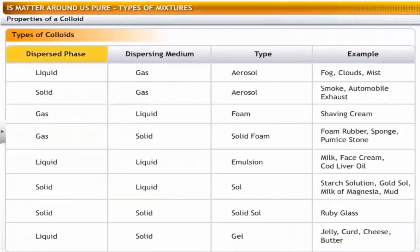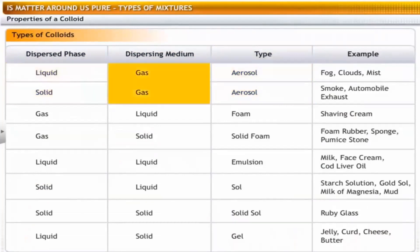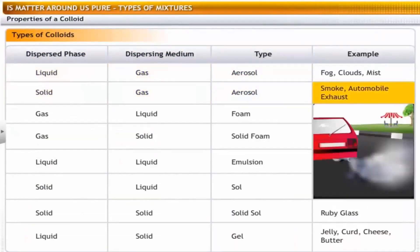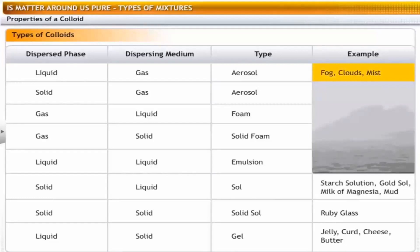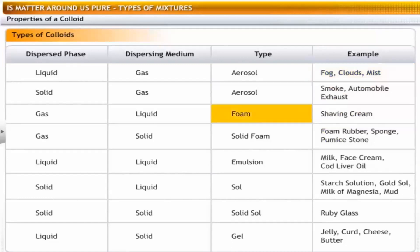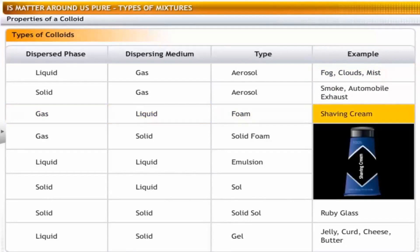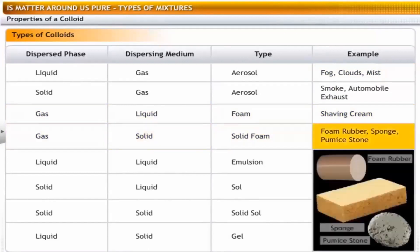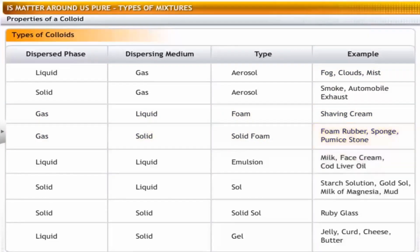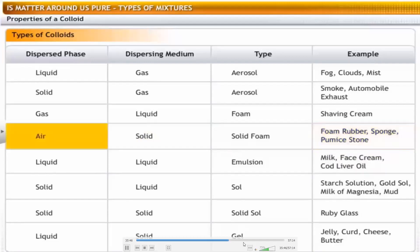An aerosol is a colloid in which the dispersed phase is a solid or liquid and the dispersing medium is a gas. Smoke and automobile exhausts are aerosols in which solid carbon particles are dispersed in air. Fog, clouds and mist are aerosols in which water is dispersed in air. Foam is a colloid in which a gas is the dispersed phase and a liquid is the dispersing medium — for example, shaving cream in which air is dispersed in water or alcohol. Solid foam is a colloid where a gas is the dispersed phase and a solid is the dispersing medium — examples include foam rubber, sponge and pumice stone, where air is dispersed in rubber.